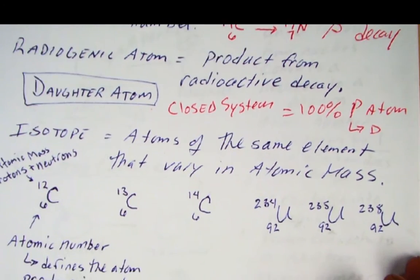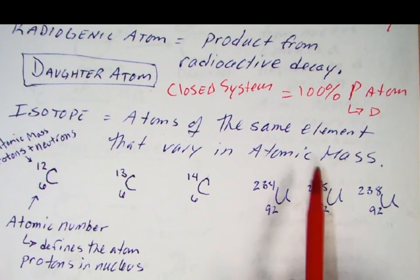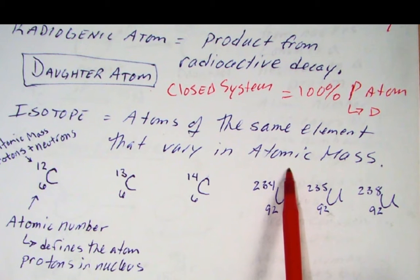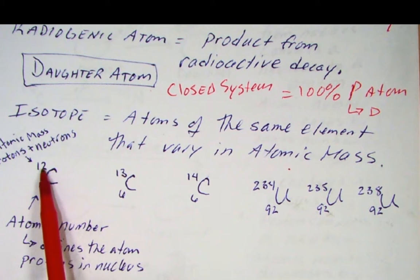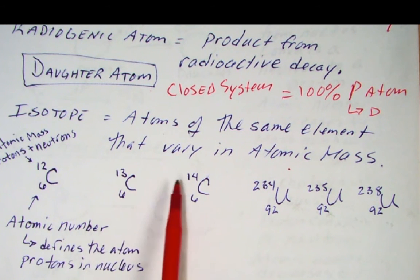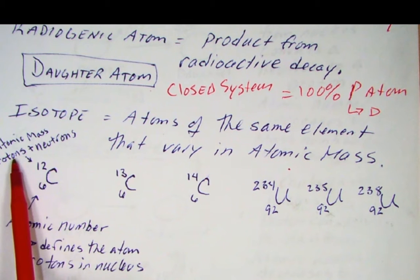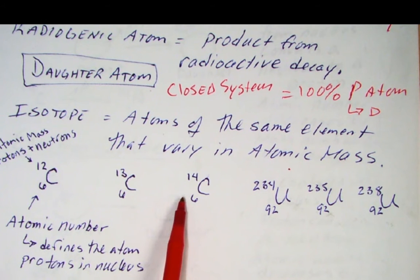So the other big thing to talk about here are isotopes. Remember, isotopes are atoms of the same element that vary in their atomic mass. So they're going to have different numbers of neutrons. For example, by convention, remember the isotope or the mass number is always in the superscript, whereas the atomic number is always in the subscript. So these three atoms are all carbon because they all have six protons in their nucleus. But they vary in their number of neutrons because the atomic mass is the addition of protons plus neutrons.